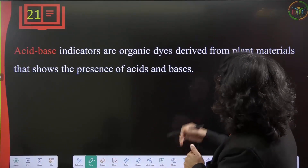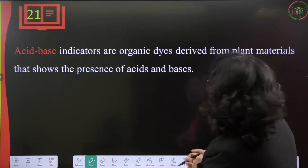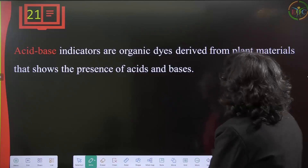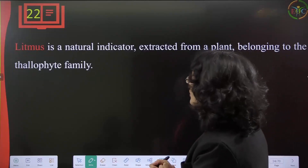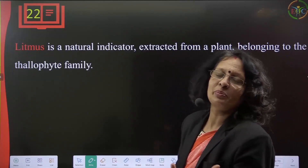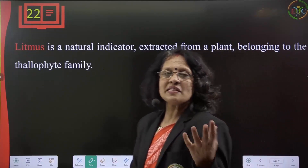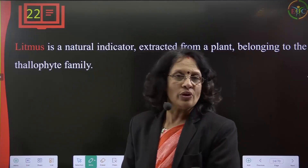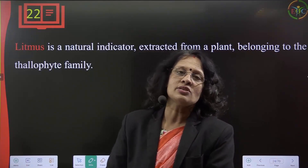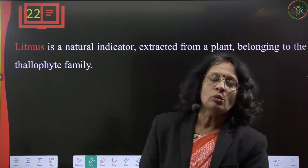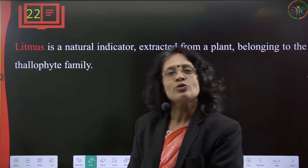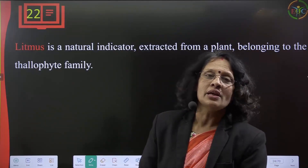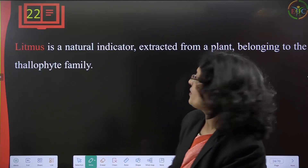Acid-base indicators are organic dyes derived from plant material that show the presence of acids and bases by a color change. Litmus is one such indicator. Whenever red litmus turns blue, the substance is basic. Whenever blue litmus turns red, the substance is acidic.